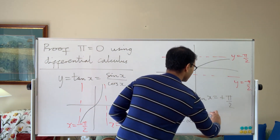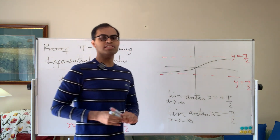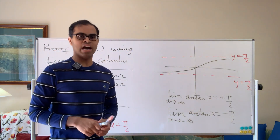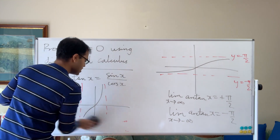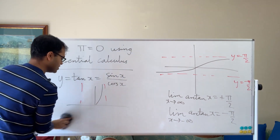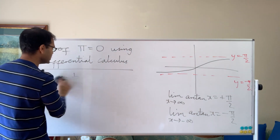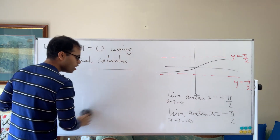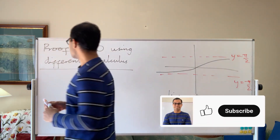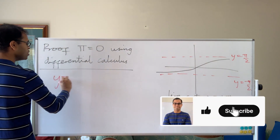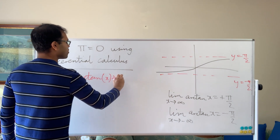Now I'm going to construct a new function that gives us the proof that pi equals zero. The function is y equals arctan x plus arctan of 1 over x. This is where things get really spicy, and we'll use a little differential calculus.